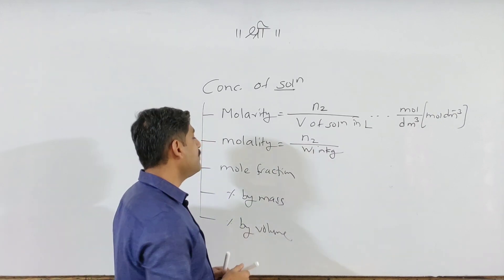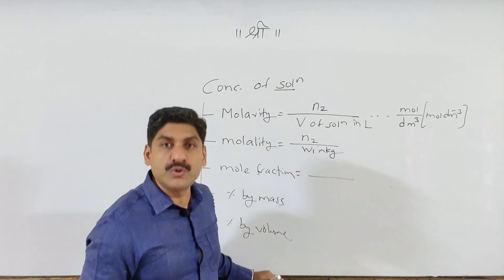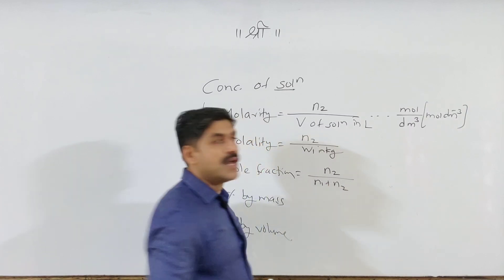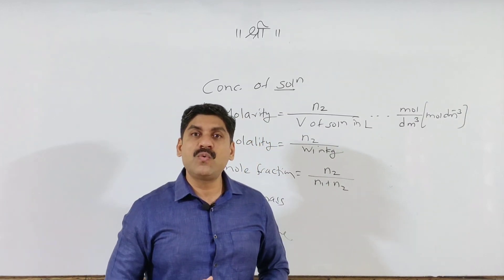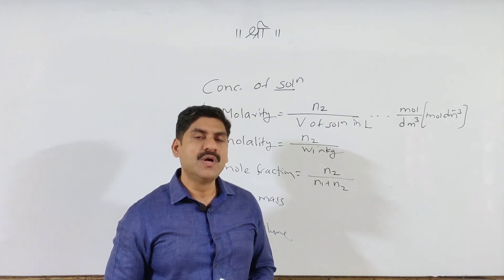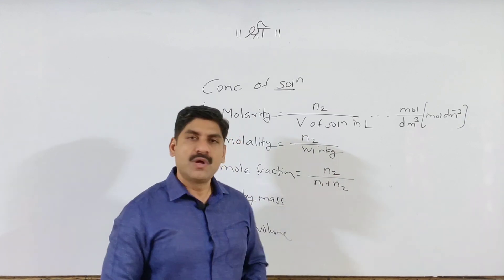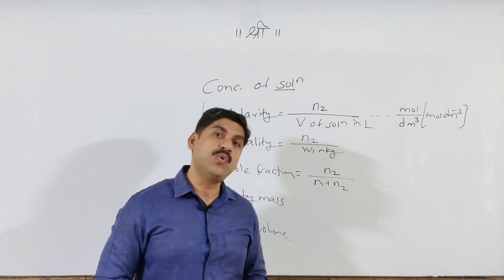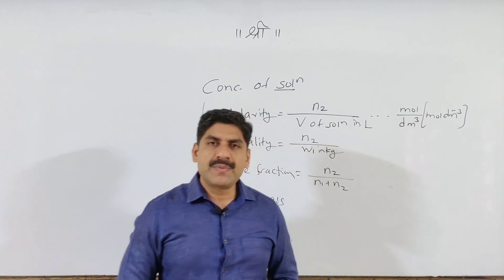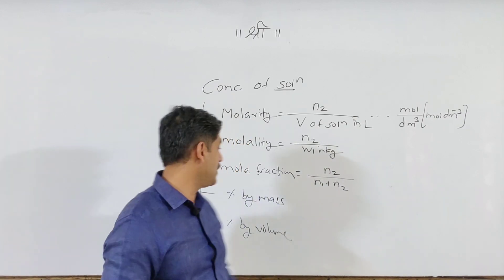Next, mole fraction. Mole fraction of solute: take the moles of solute (n2) divided by total number of moles (n1 + n2). Mole fraction of solvent: n1 divided by (n1 + n2). Mole fraction of solute: n2 divided by (n1 + n2). Note that the sum of mole fractions of the solution equals unity — its value is 1.